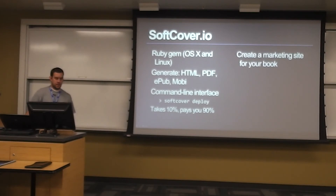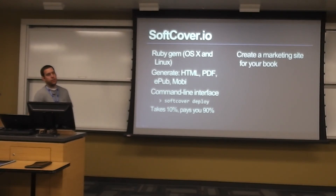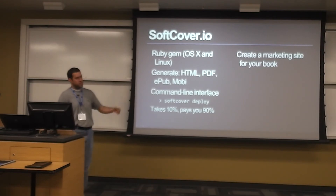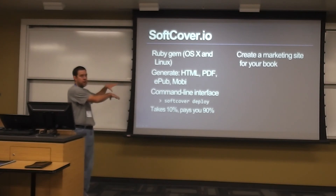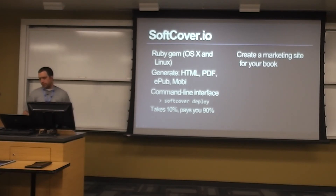I suspect you can take the EPUB and MOBI files and sell them on other platforms as well. One of the other cool things they do is make it easy to create a website on softcover.io — they've got an interface for creating your own site and they'll allow you to point your domain, like TrevorHunsaker.com, there. They host it all and do all the infrastructure for 10% of each sale.